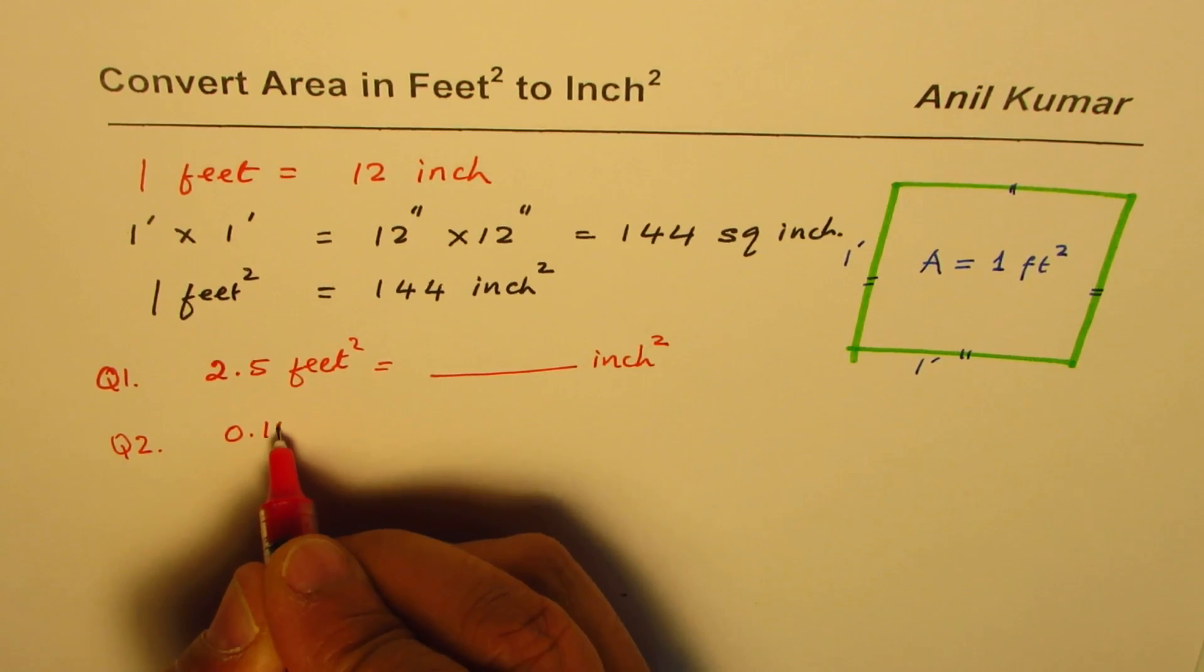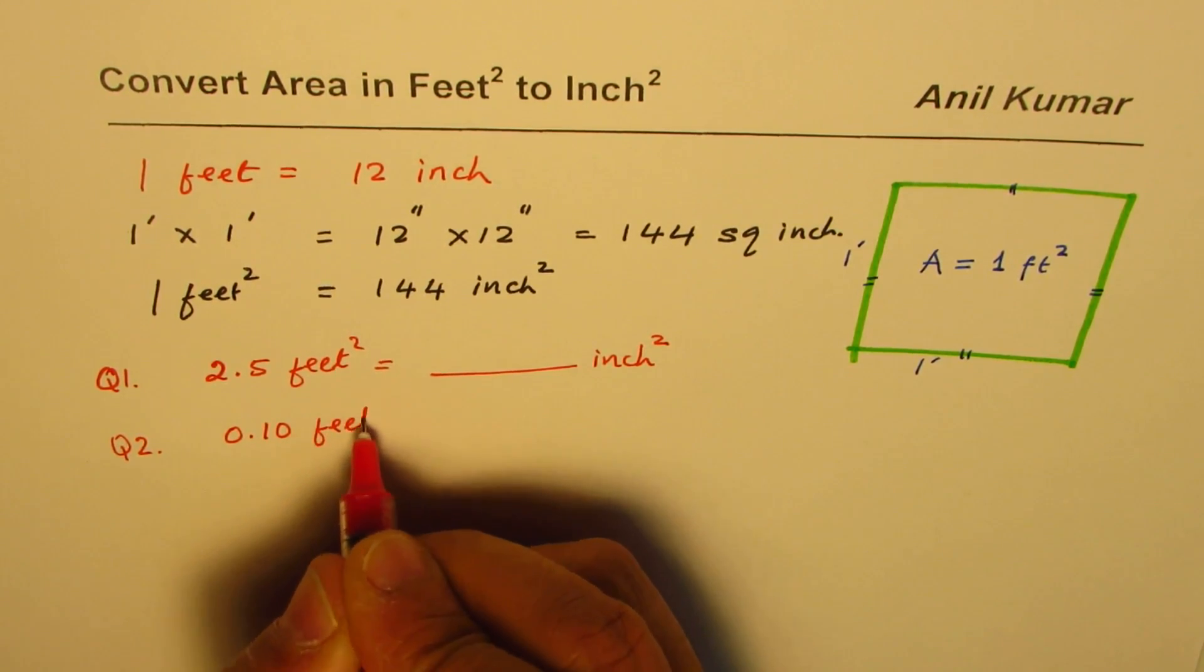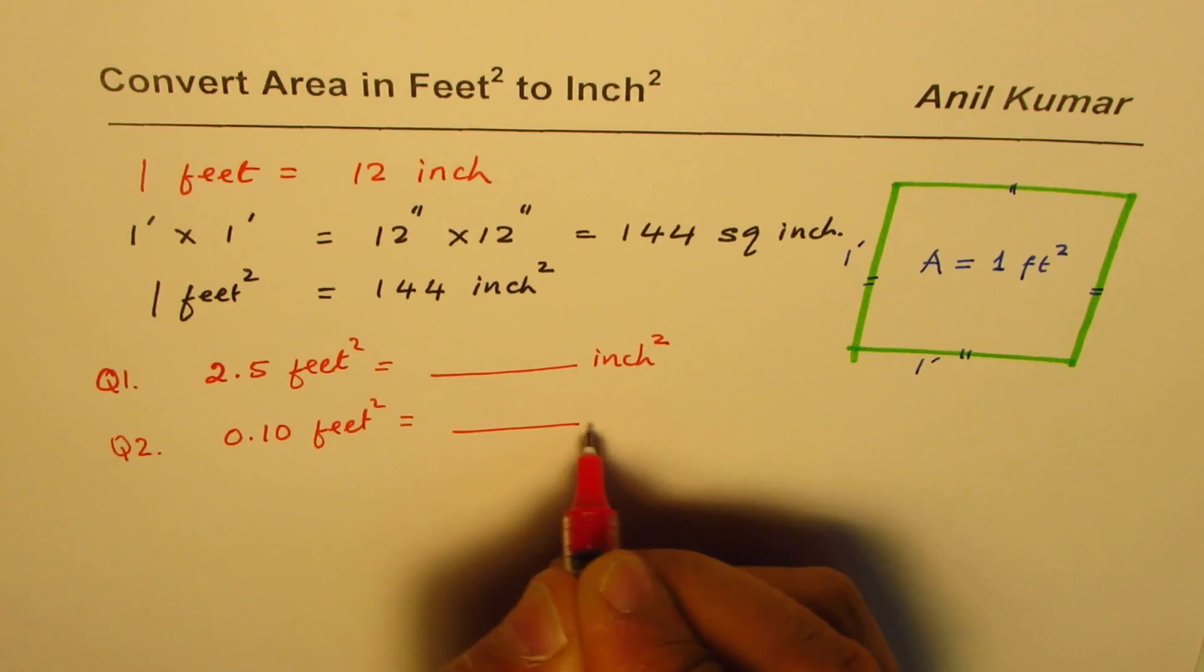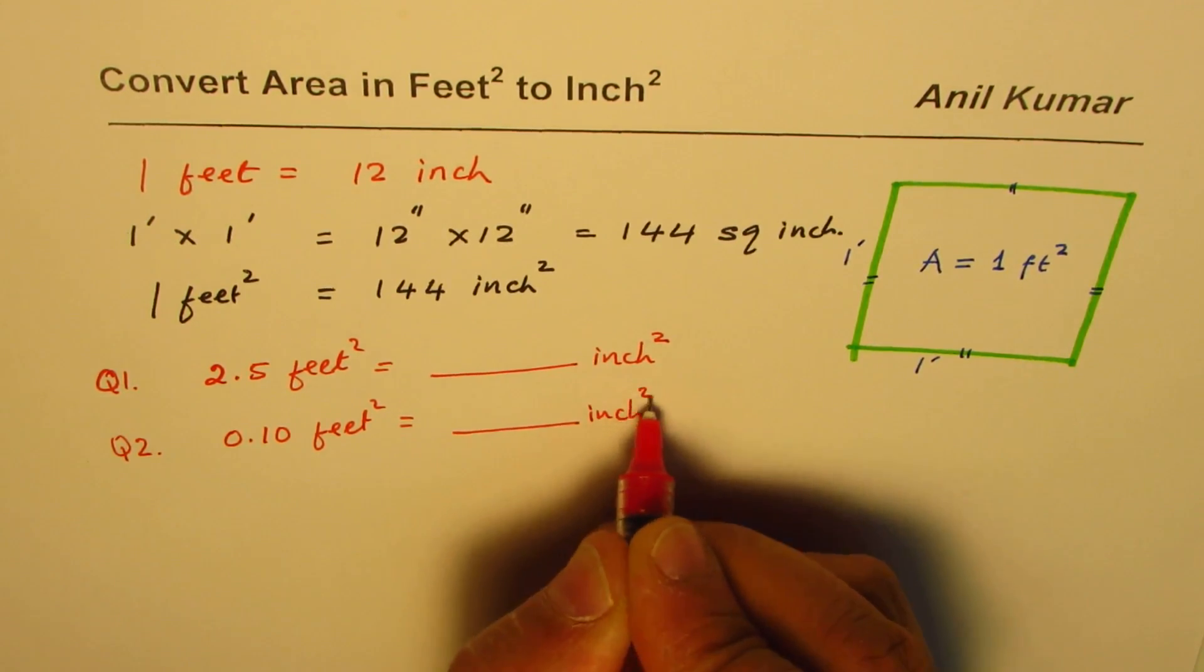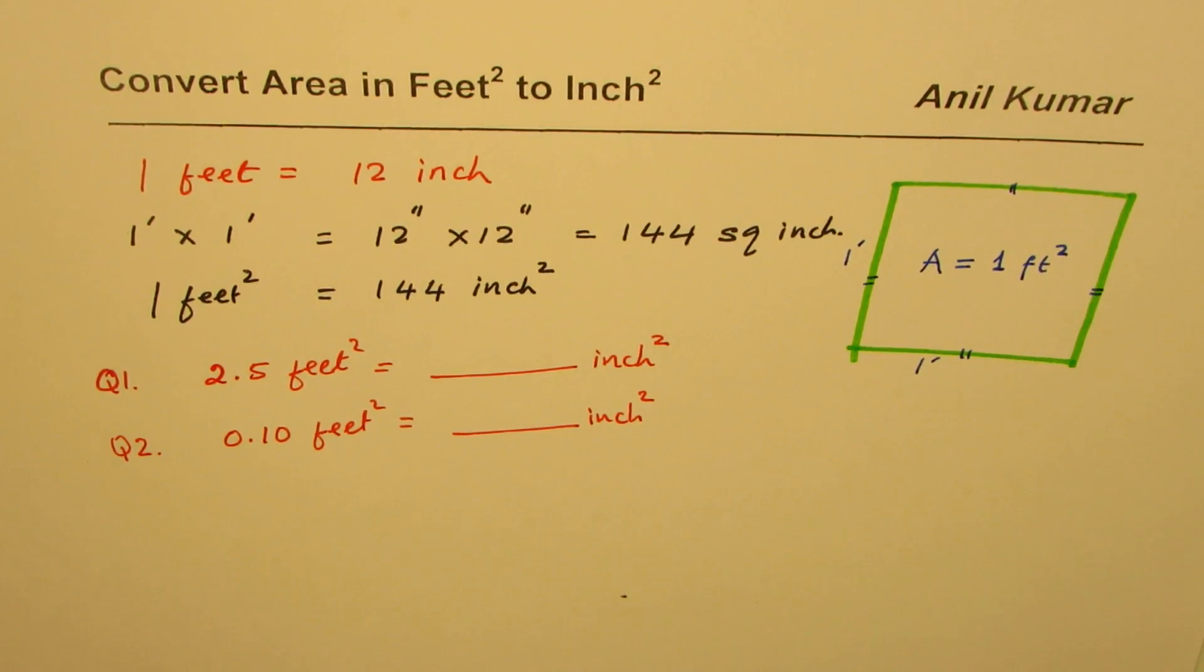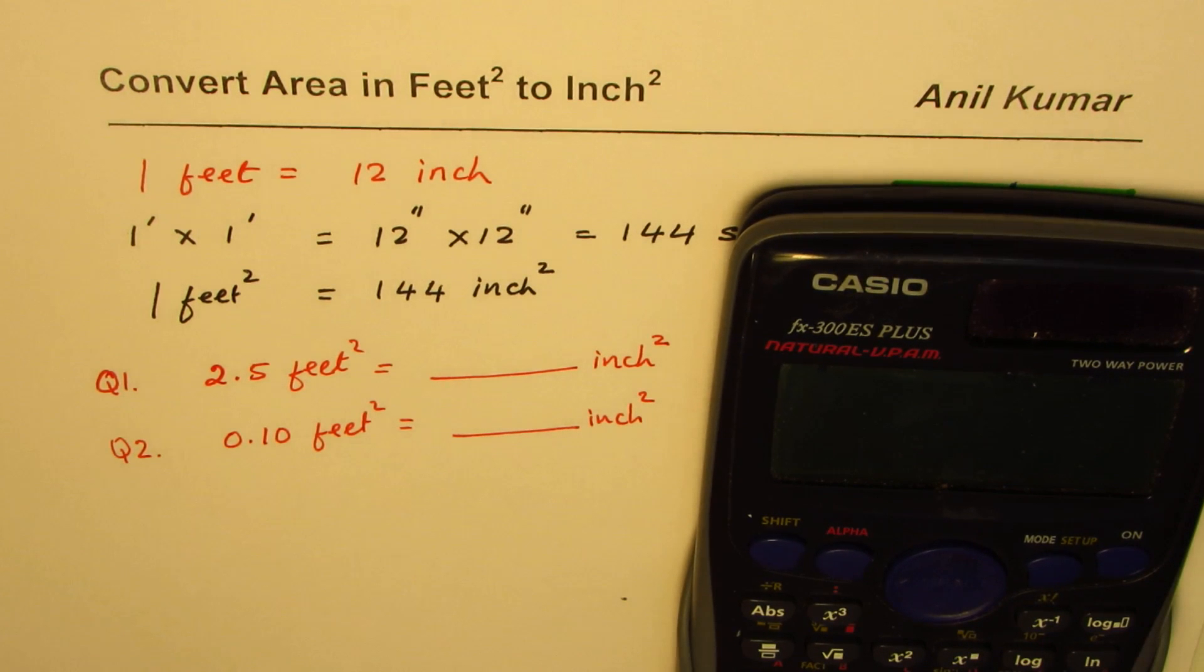It's very simple - just multiply by 144 to get the answer. For the first question, 2.5 times 144 equals 360 square inches.